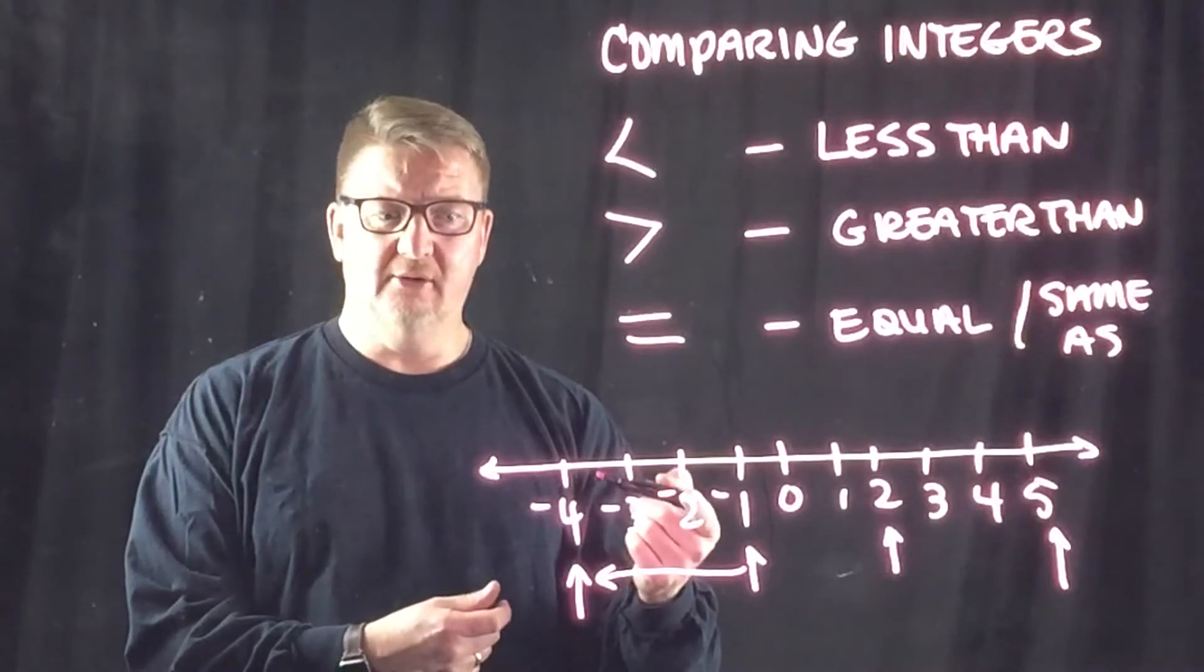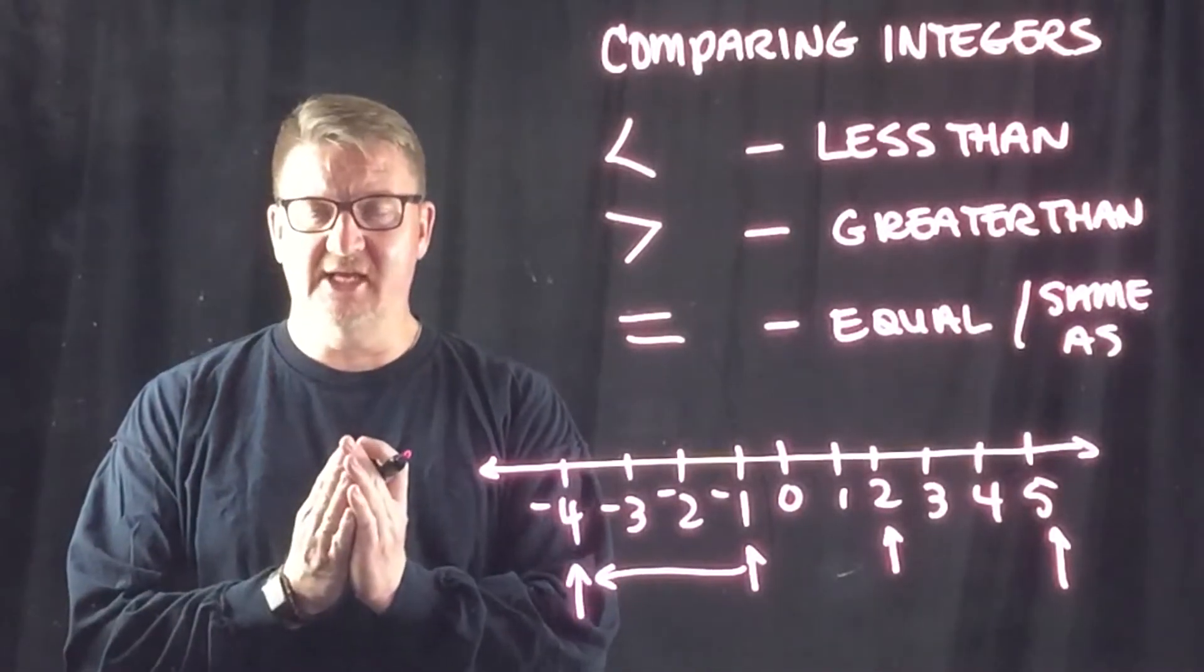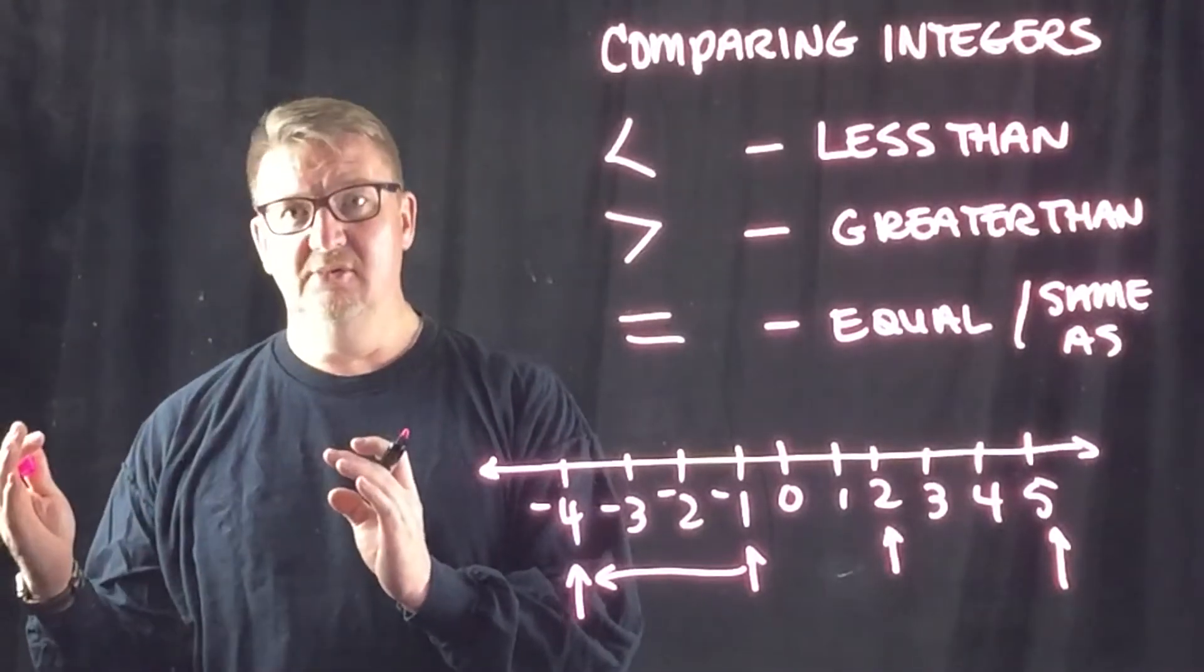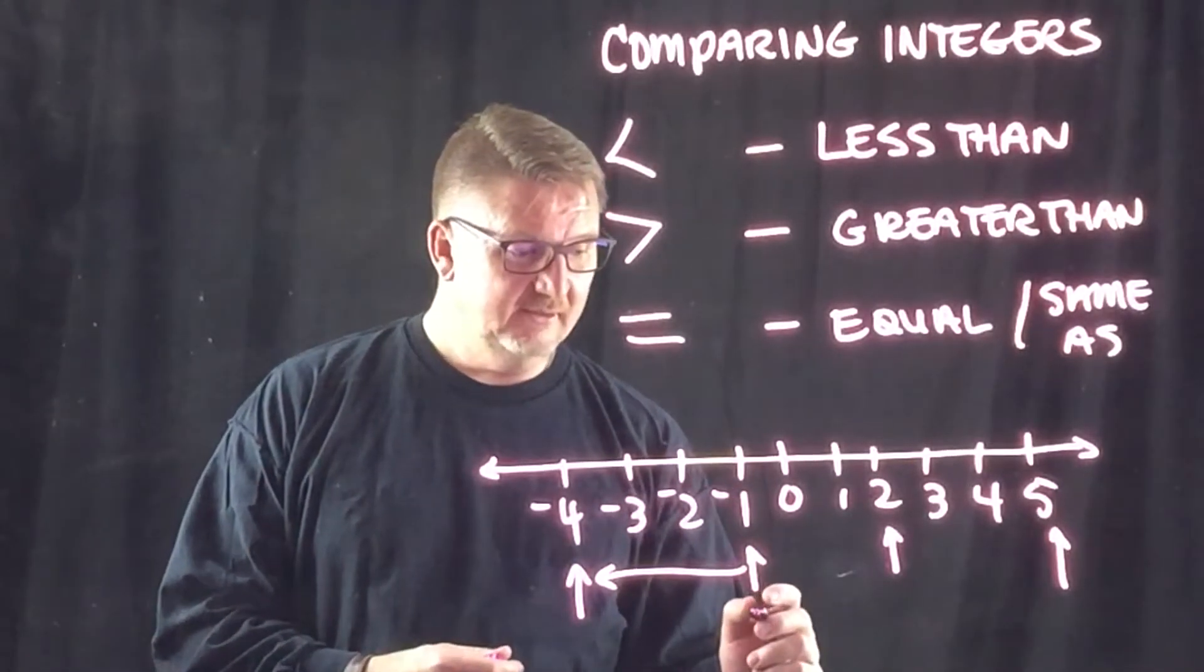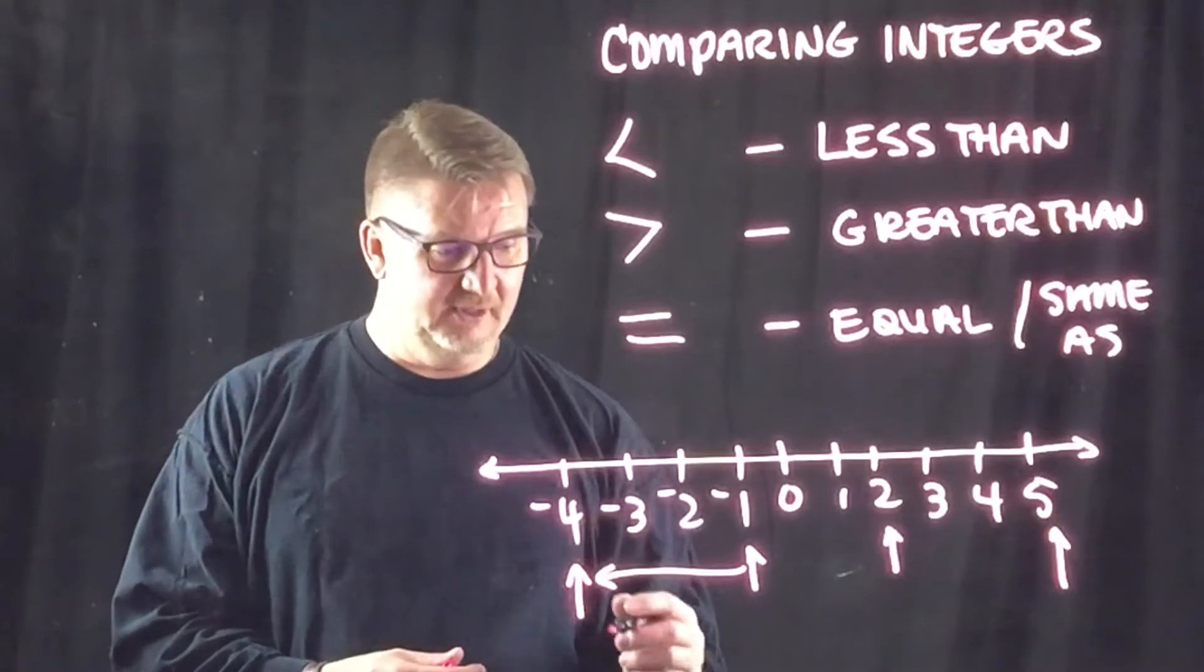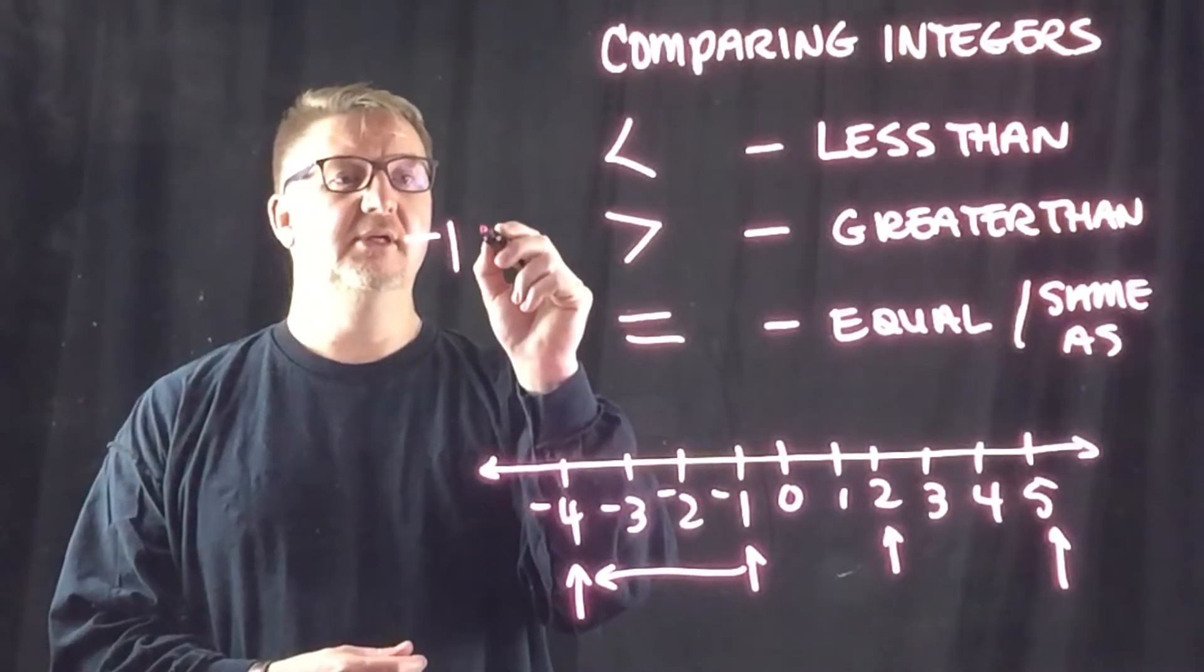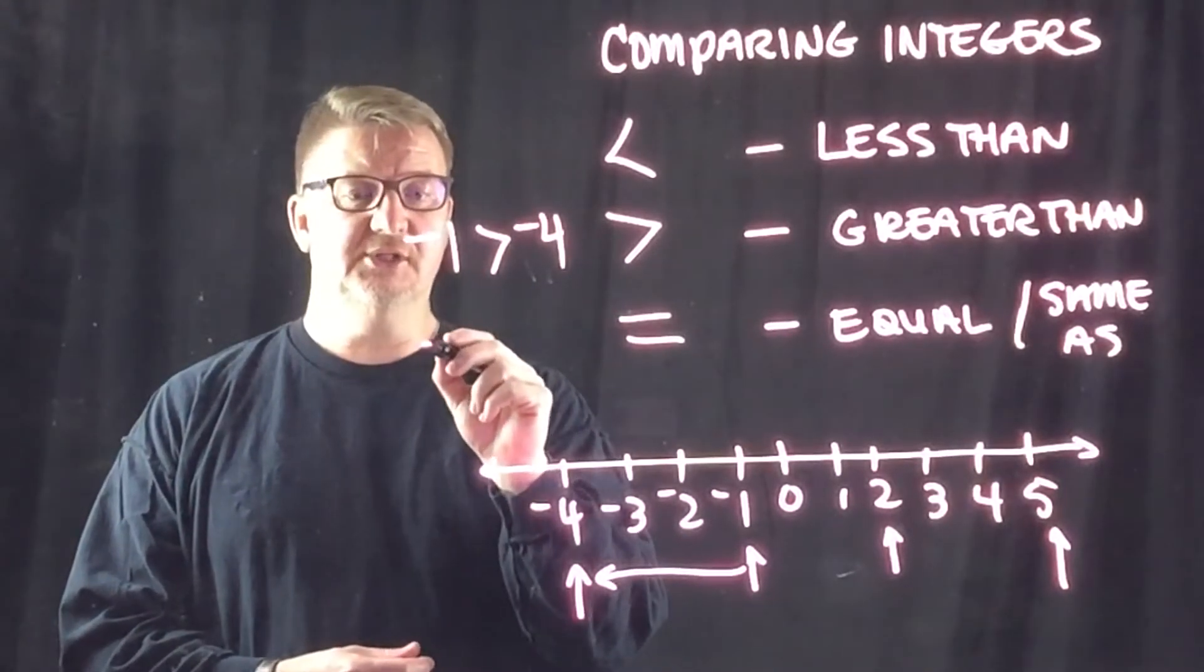Okay, and now that works on any part of the number line. You can go to negative 78 and it is always going to be greater than negative 80. Negative one is greater than negative four, and we can make that comparison. We can say negative one is greater than negative four, or you can say negative four is less than negative one.